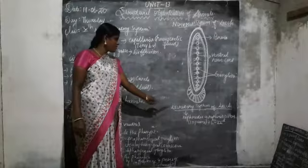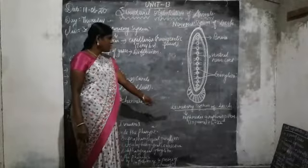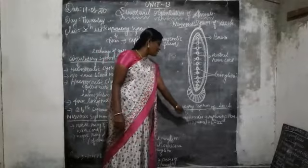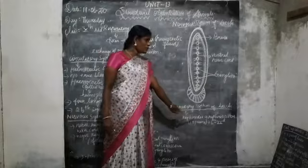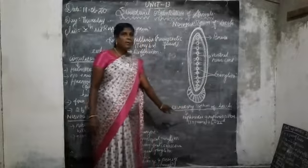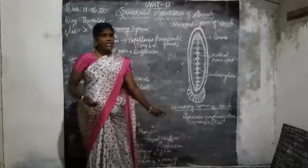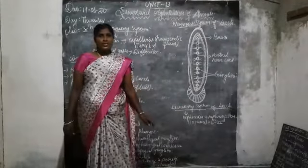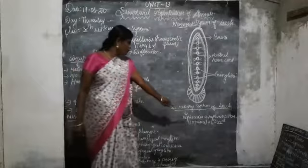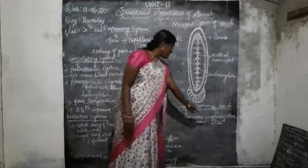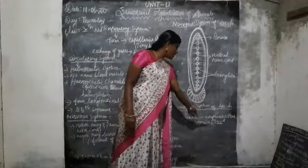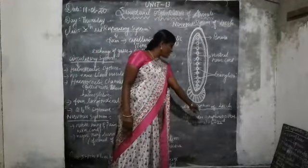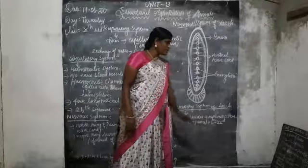There are several pairs of nephridia in leech, which open to the exterior through pores. These are also called as nephridiopores, and they are present between the 6th and 22nd segments.